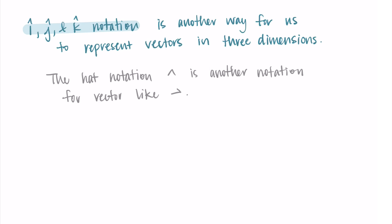It's an alternative to the arrow symbol. But we use the hat specifically with this type of notation, and it's just to help us distinguish these specific i, j, and k vectors from just any old vector. So the hat helps us distinguish these special vectors.